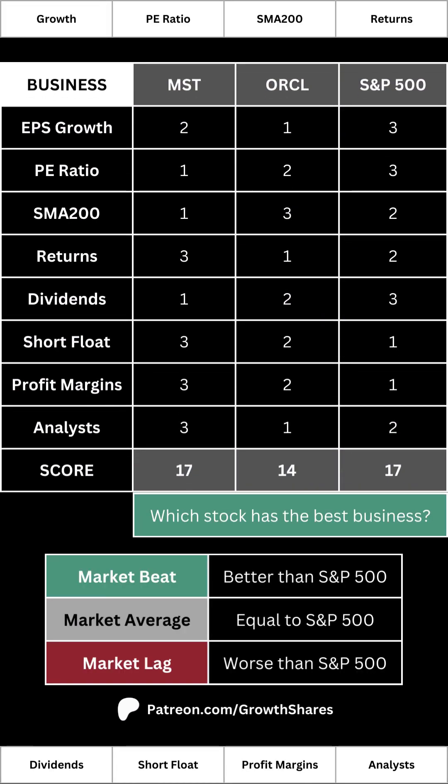Do you remember all those points at the bottom right of the screen for each metric? That's how I grade each of our three stocks. What you see here is the total score, and that translates to ranking the best business and the worst business. If the company has the highest score against its competitor and the S&P 500, we can say it has the best business — meaning it's a market beat. If it has a lower score it's a market lag, and if it has the same score it's at market average.